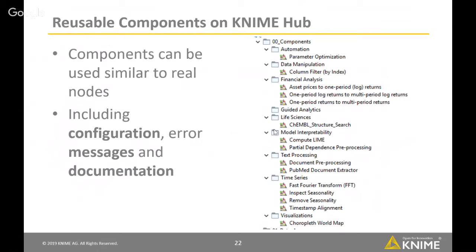If you ever check the components living on the KNIME Hub, also check out how we handle error messages. We wanted to make sure you can really use a KNIME component just like a normal KNIME node — and like a normal node, it will report errors when missing columns, for example. This is also implemented in our public components on the Hub.